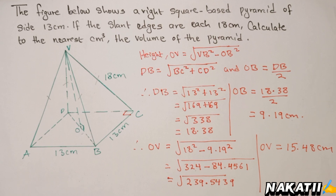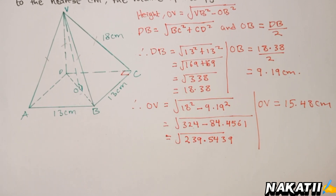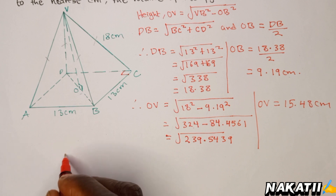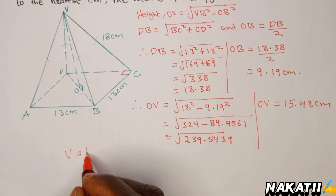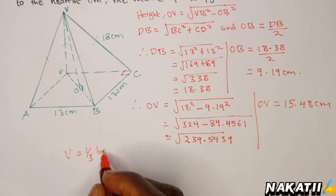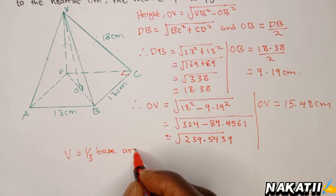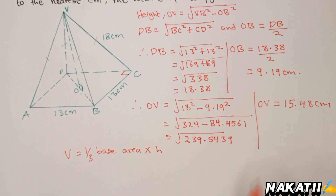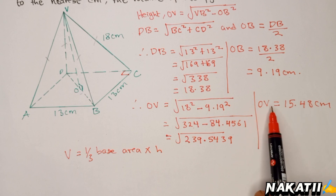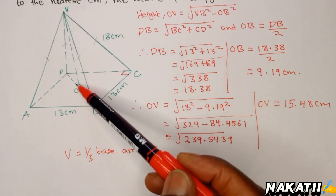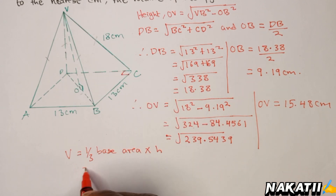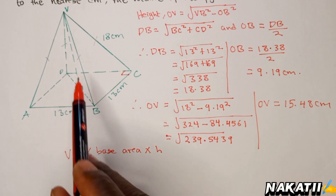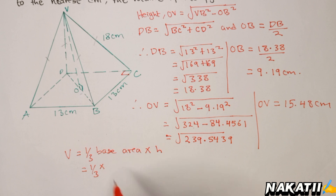The volume of a pyramid is simply one-third times the base area times the perpendicular height, which we have found as OV. Therefore, we have one-third times the base area — it is a square, which is just 13 times 13 — then times the perpendicular height, which is 15.48.